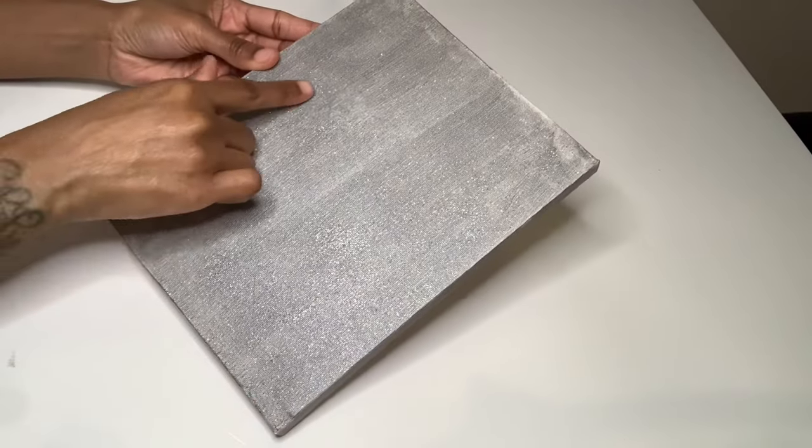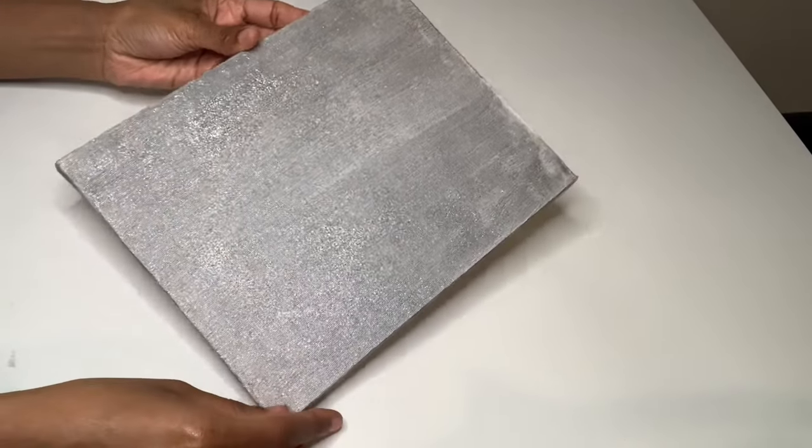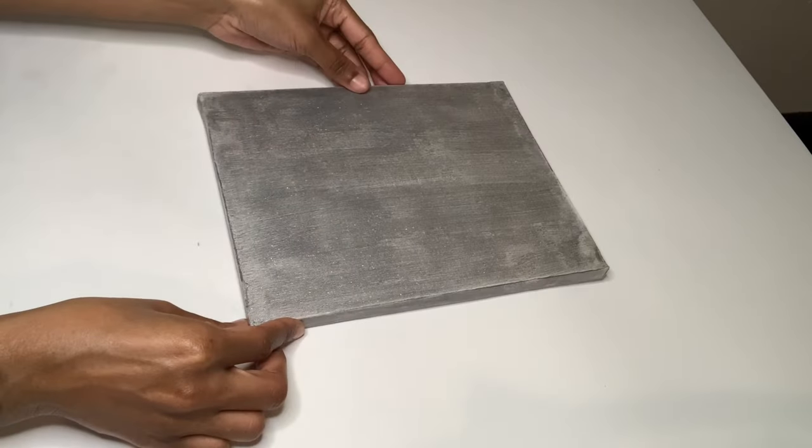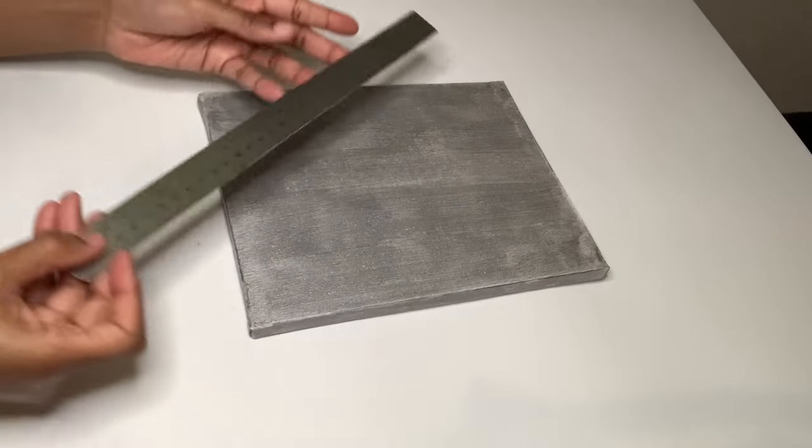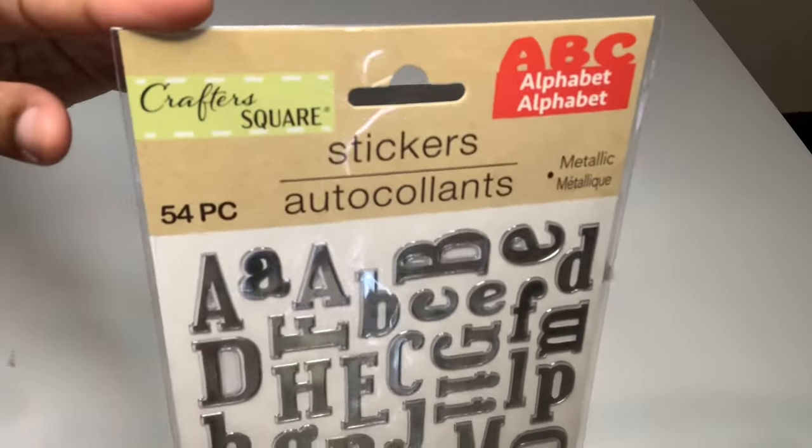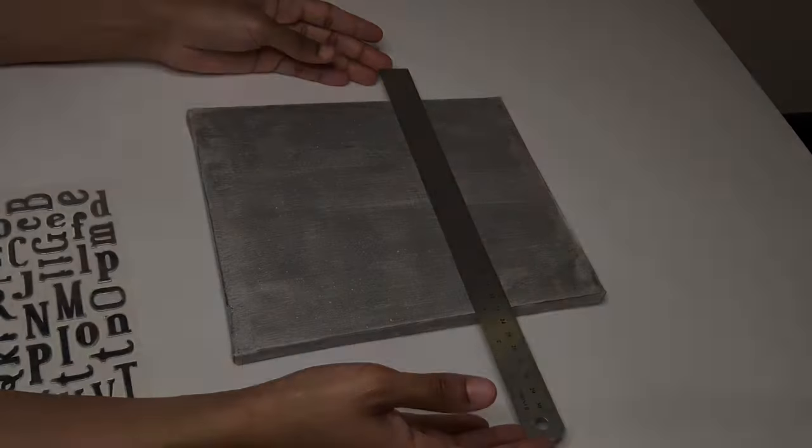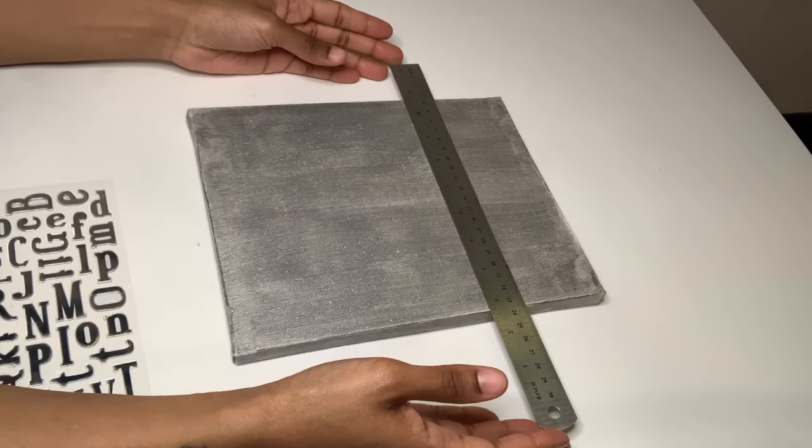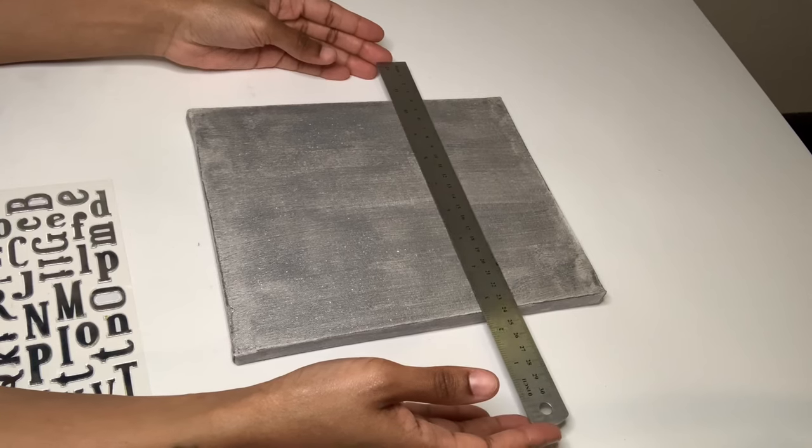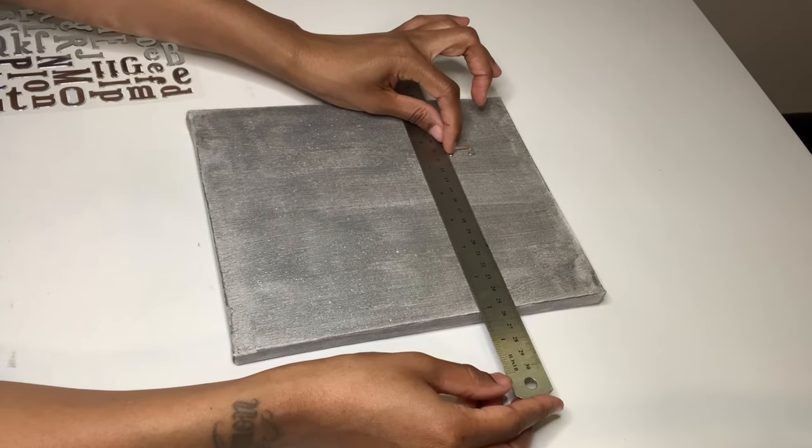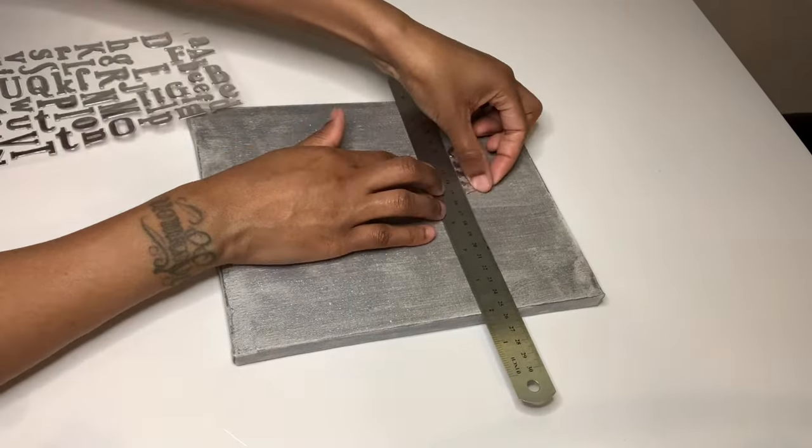This canvas turned out exactly how I wanted. I wanted some white color left in the background. I'm using my ruler that I purchased from Dollar Tree to keep my sticker letters perfectly aligned. I'm putting my letters in place first before gluing them down.